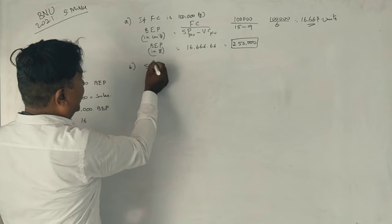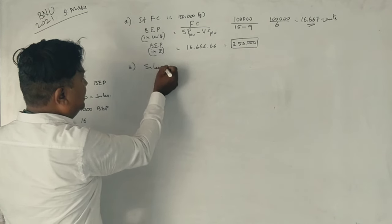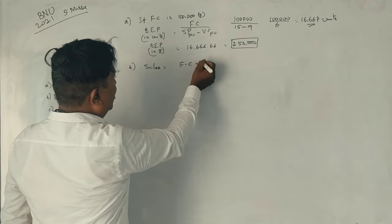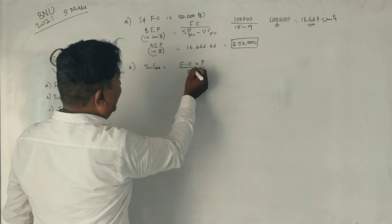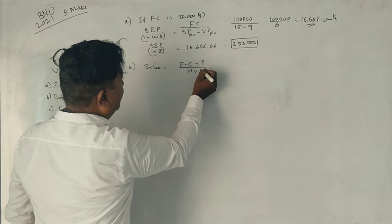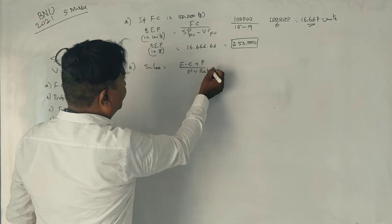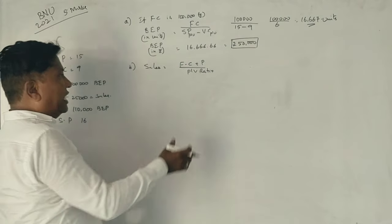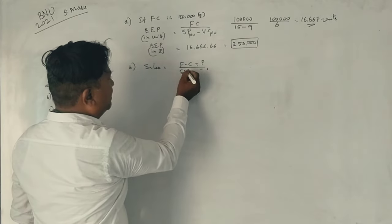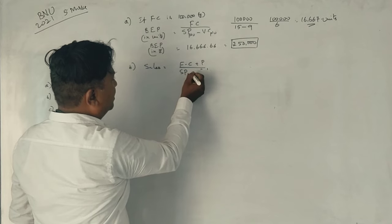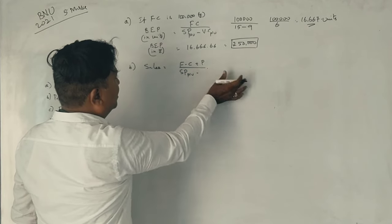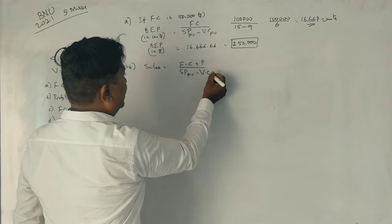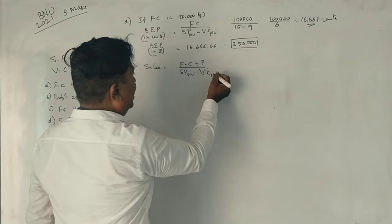Sales equals fixed cost plus profit divided by PV ratio. That is, selling price per unit minus variable cost per unit.